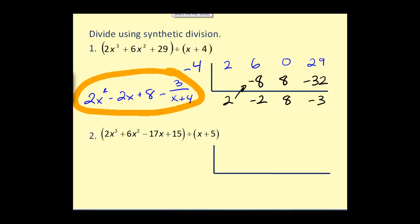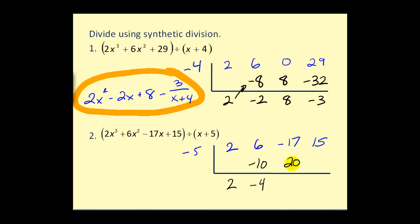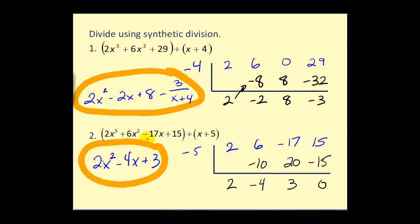Let's try another. List the coefficients — notice there are no zero terms here. Since the divisor is x plus five, k will be negative five. Bring the leading coefficient down, multiply by k giving negative ten, add, multiply by k giving positive twenty, add, multiply by k — and here we see a remainder of zero. So our quotient will be two x squared minus four x plus three. Since this divides evenly, x plus five is a factor of this polynomial.